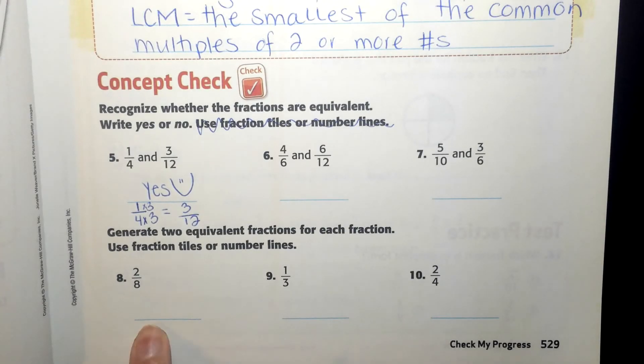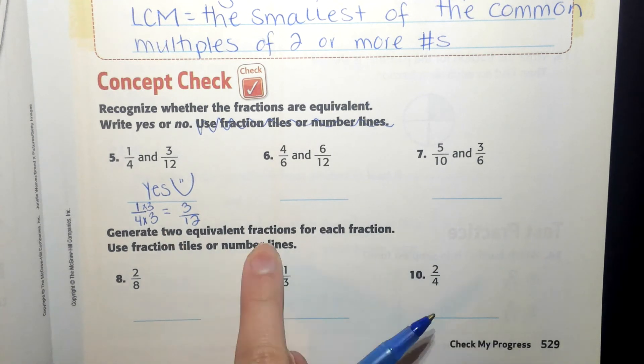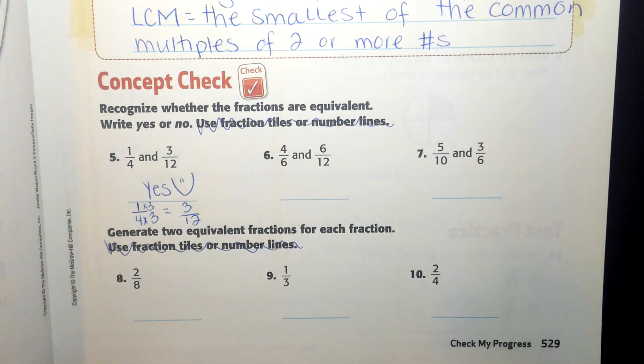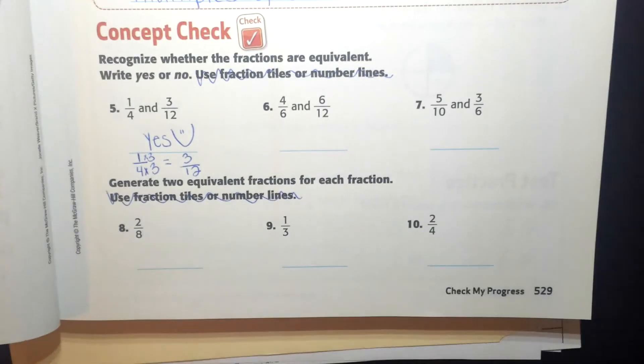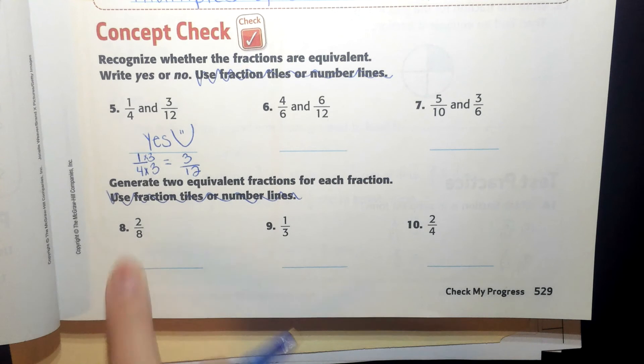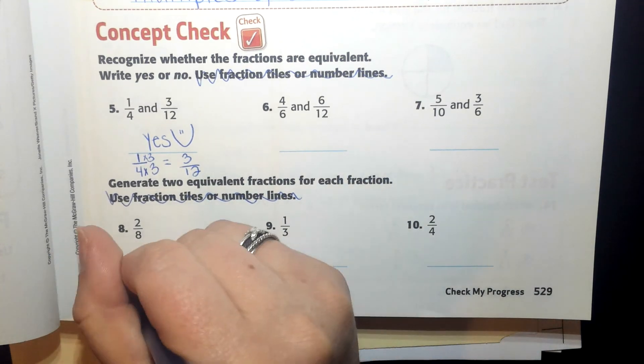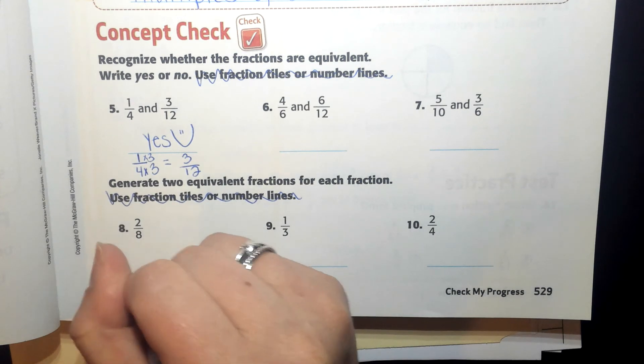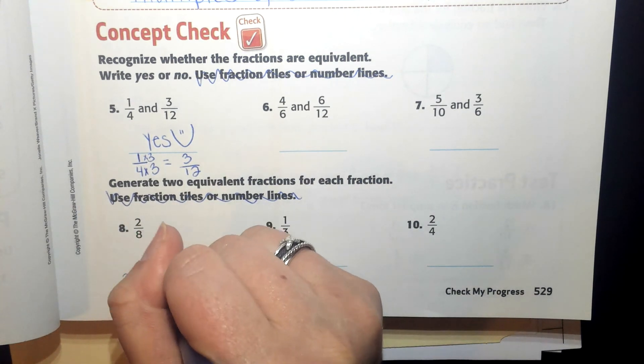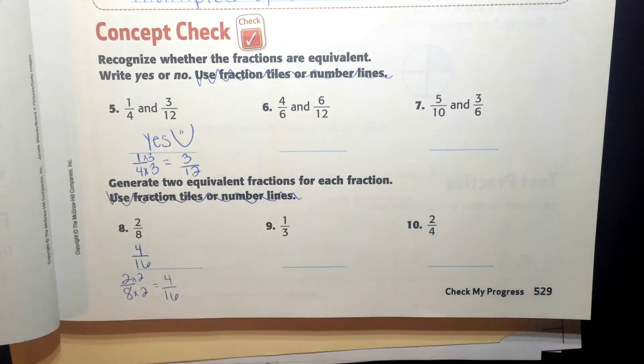Number eight says generate two equivalent fractions for each fraction. Use fraction tiles or number lines. Again, you do not need to do this part. I just want to see you do the math. So my job is to generate two equivalent fractions for two-eighths. So the way I'm going to do that is I'm going to multiply two-eighths, how about by two? So two-eighths is equivalent to four-sixteenths.